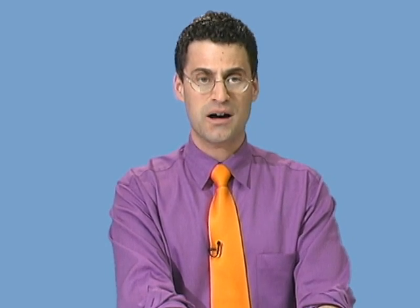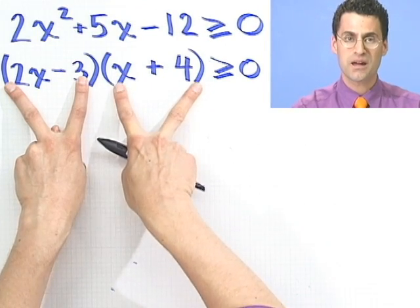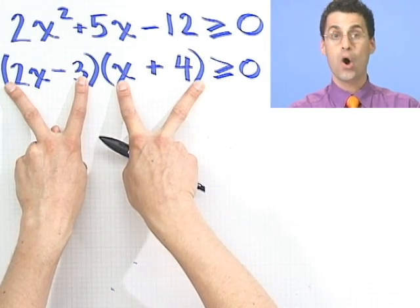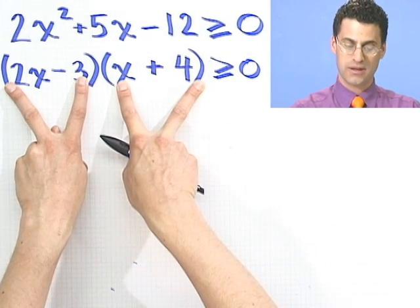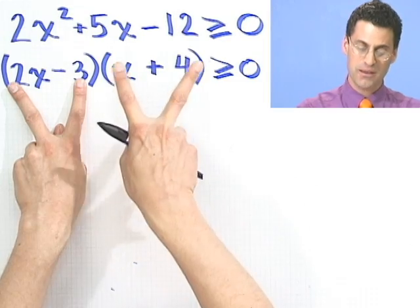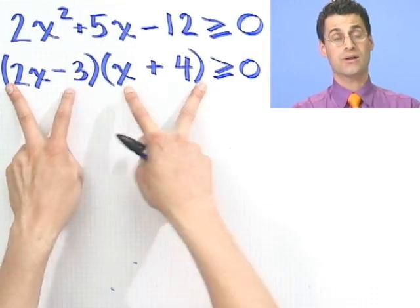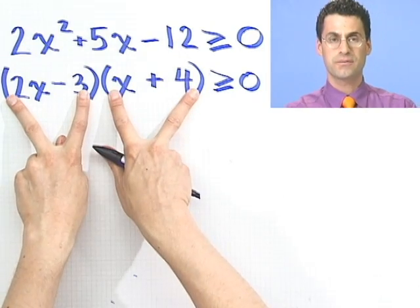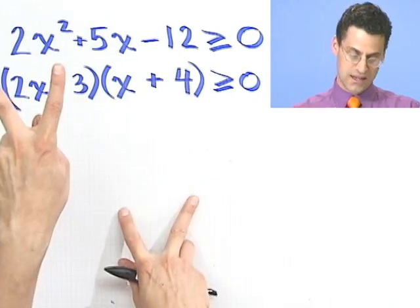Well, there's two possibilities. Either this number is positive and this number is positive, or the other possibility is this number is negative, and at the same time, this number is negative. So actually, there's two different cases we have to consider. The first case is positive, positive, and the second case is negative, negative.